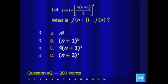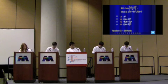Is it a) n cubed, b) n plus 1, that quantity cubed, c) 4 times the quantity n plus 1 cubed, or d) n plus 2 cubed? 200 points — does everybody want to understand the question? All right, you have 30 seconds for this one.